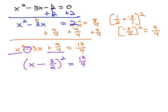And we now have something that we can solve quite nicely. We can get rid of square by taking the square root of both sides. Square and square root are gone, gives us x minus 3 halves equals. When we take the square root of both sides, we need plus or minus.